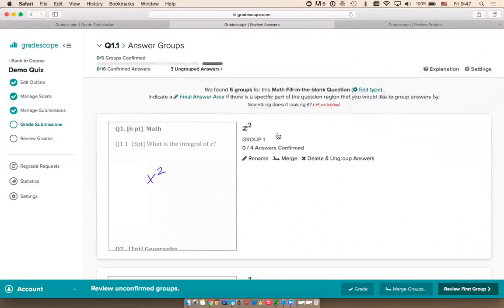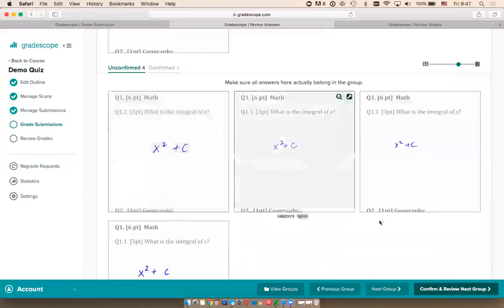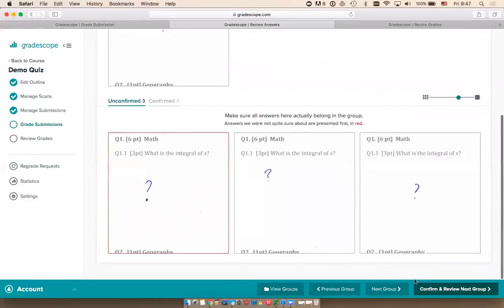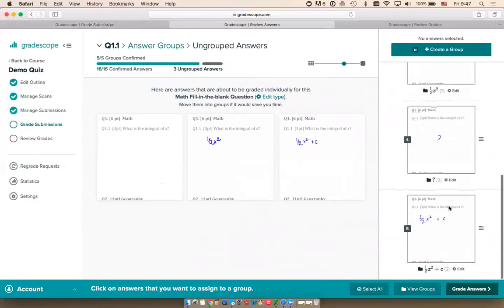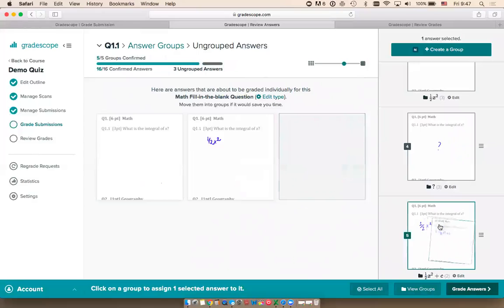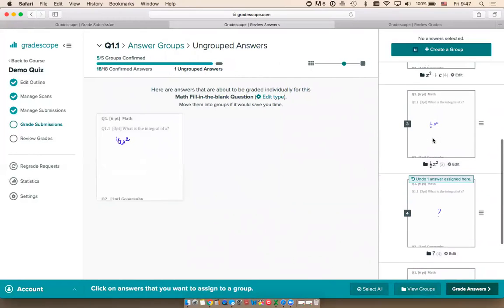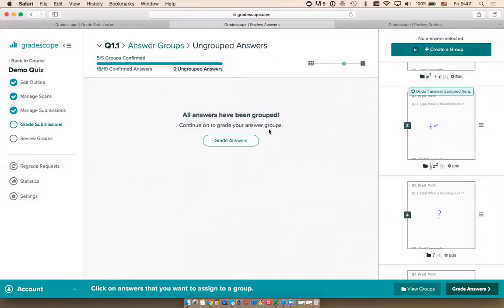I can quickly review to make sure the AI correctly identified the answers in each group. These look good. These are all x squared plus C. I'm going to quickly review all my groups. Any answers the AI wasn't sure about will be left for you to group manually at the end. In this case, you can just drag over this one-half x squared plus C to the appropriate group, drag this to the blank group, and drag this one to the one-half x squared group. All my answers have been grouped.